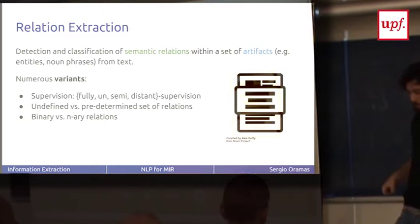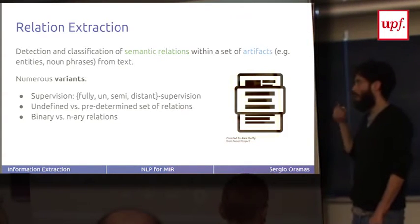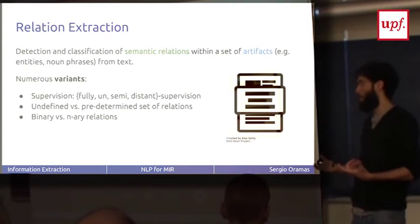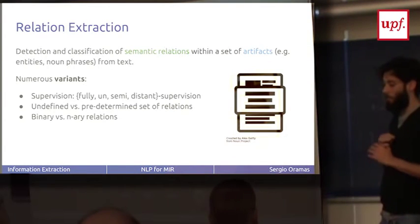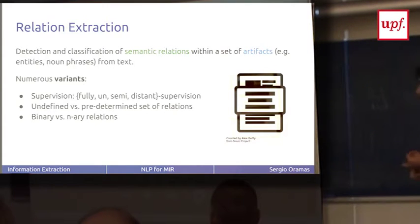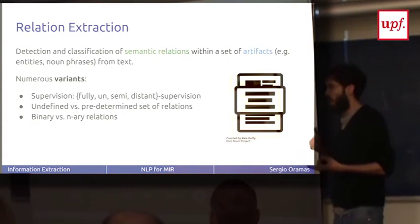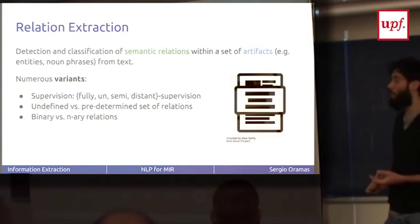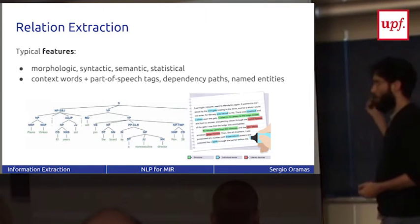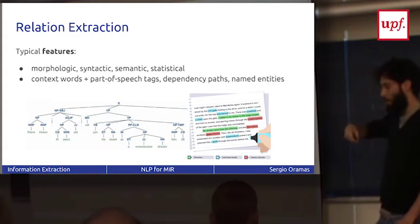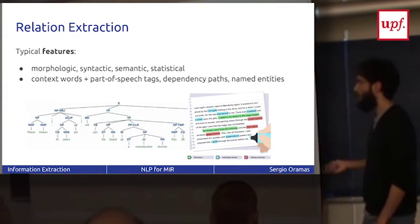Relation extraction is another very interesting problem where the idea is to detect and extract relations from the text. These relations are between artifacts - entities, noun phrases, chunks, different things. There are many variations for relation extraction. It depends on the degree of supervision used for the system, or if the semantic relations are defined a priori or not, if they have to extract binary relations or n-ary relations. For many years, a lot of research into that - it's not a solved problem. The typical features these systems use are all kinds of linguistic features, from morphological to semantic, syntactic, and entities.